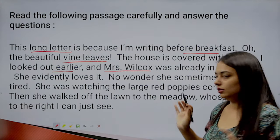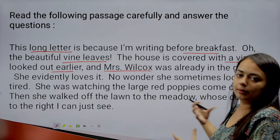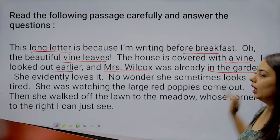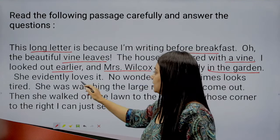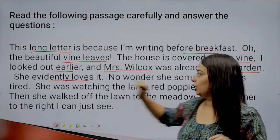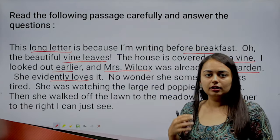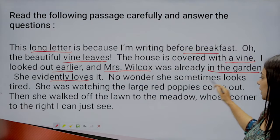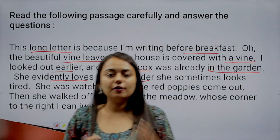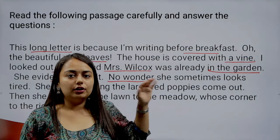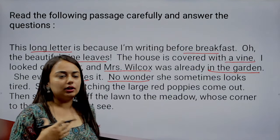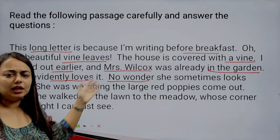'I looked out earlier and Mrs. Wilcox was already in the garden.' She is talking about Mrs. Wilcox, a character in this novel. Our narrator noticed that Mrs. Wilcox was already present in the garden. 'She evidently loves it' — it is clearly visible that Mrs. Wilcox adores being in the garden. 'No wonder she sometimes looks tired' — because she spends so much time outside working there.